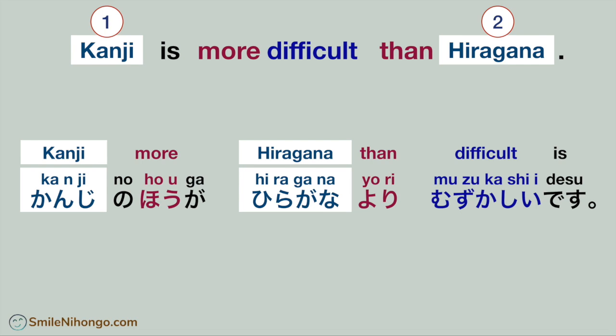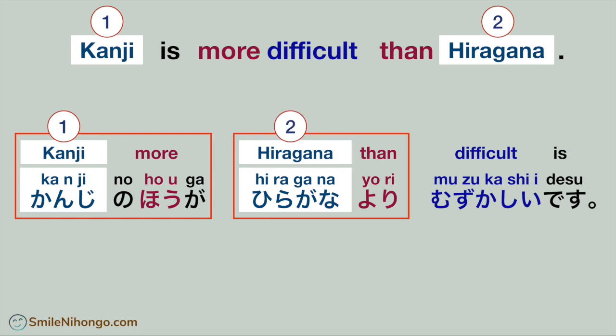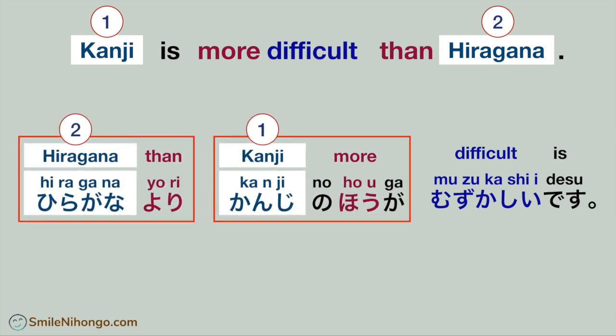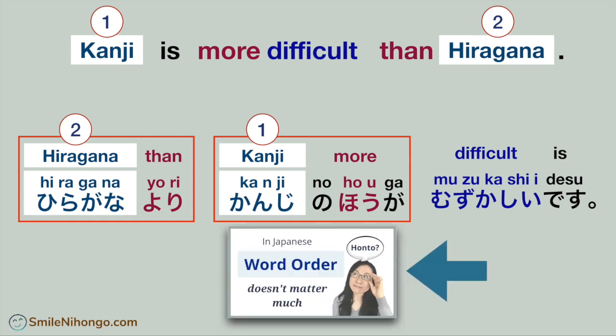Let's get back to this sentence. You have one unit with option number one — your choice — and another unit with option number two, which you didn't choose. You can switch these two units as long as you don't break the units, and the sentence still means the same: kanji is more difficult than hiragana. If you haven't watched the lesson from Japanese 3 about how flexible Japanese sentences can be, you may want to watch it first. I'll leave the link below this video.